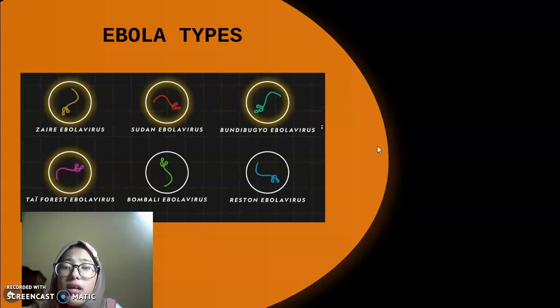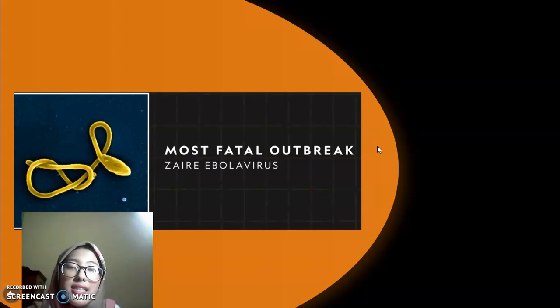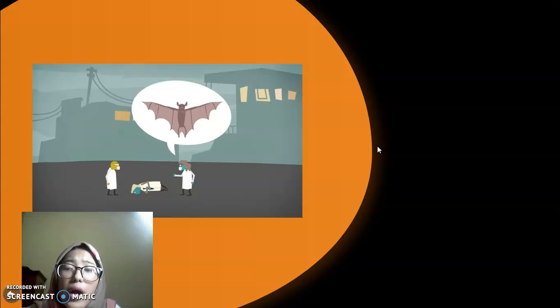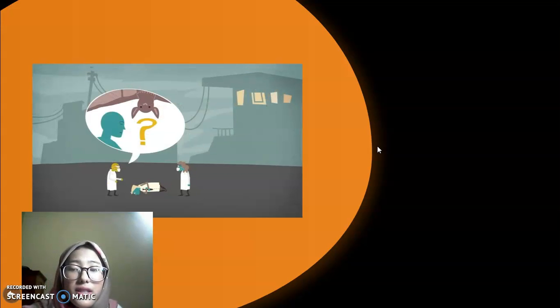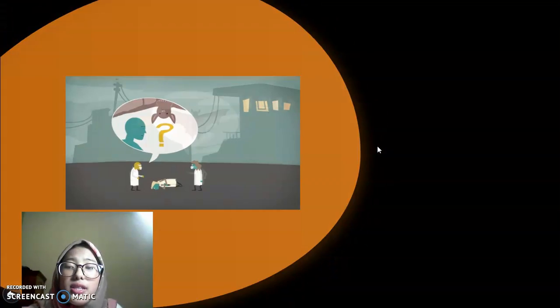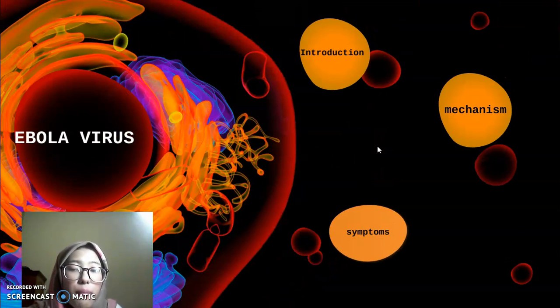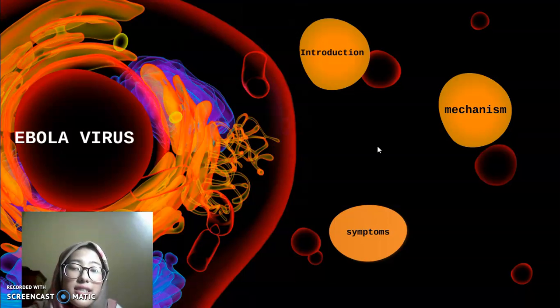While outbreaks have been caused by multiple species of Ebola virus, the strain with the highest fatality rate was the first to be discovered, the Zaire Ebola virus. Scientists believe fruit bats to be its natural carriers, but how it is transmitted to humans remains unknown. Furthermore, many of the countries where Ebola outbreaks occur suffer from poor infrastructure and sanitation, which enable the disease to spread.